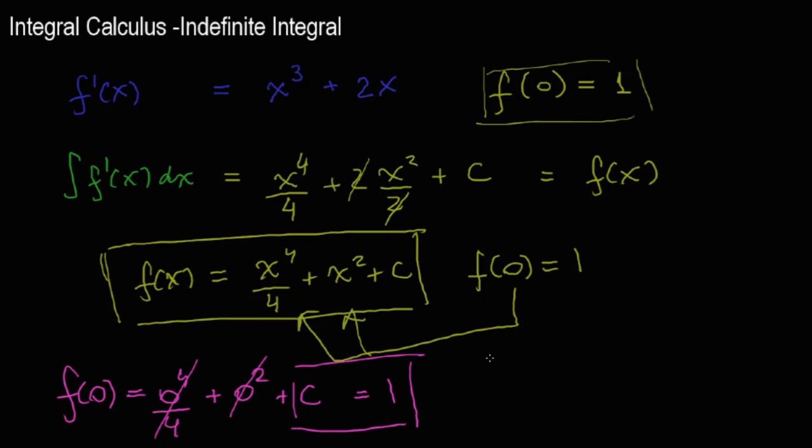Now you do know your function. Your function here would be x to the power 4 over 4 plus x squared plus 1. As simple as that.